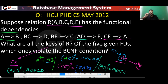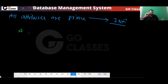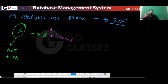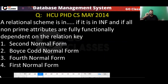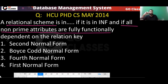Regarding a related exam question (ISRO Scientist B 2016): a relation scheme is in Second Normal Form (2NF) if it is in 1NF and all non-prime attributes are fully functionally dependent on the key. So the answer to that question is 2NF.